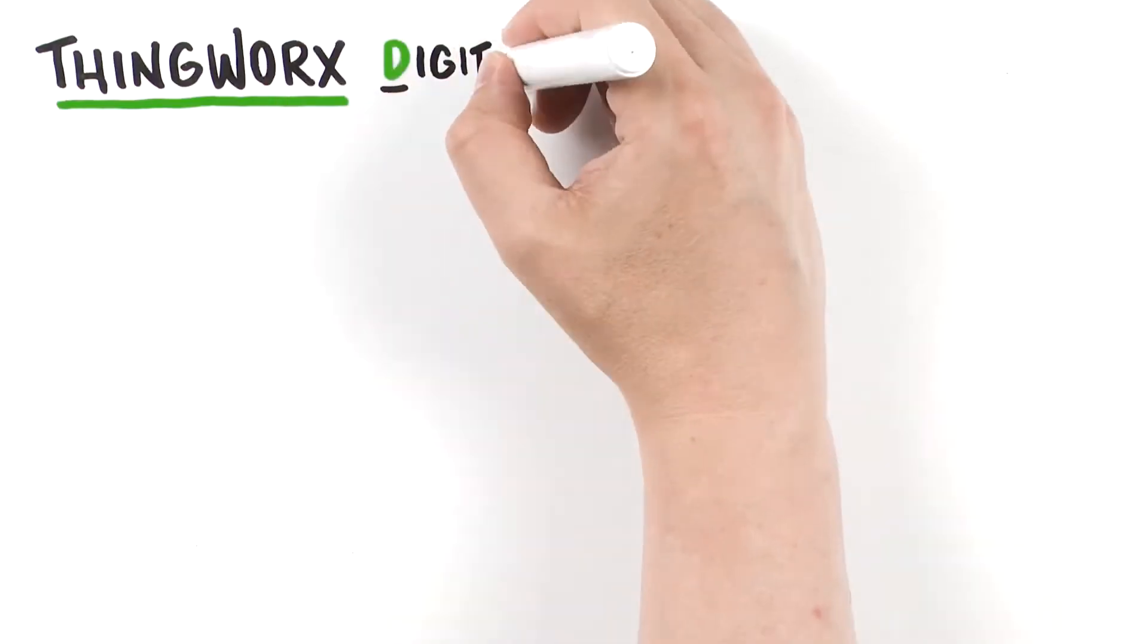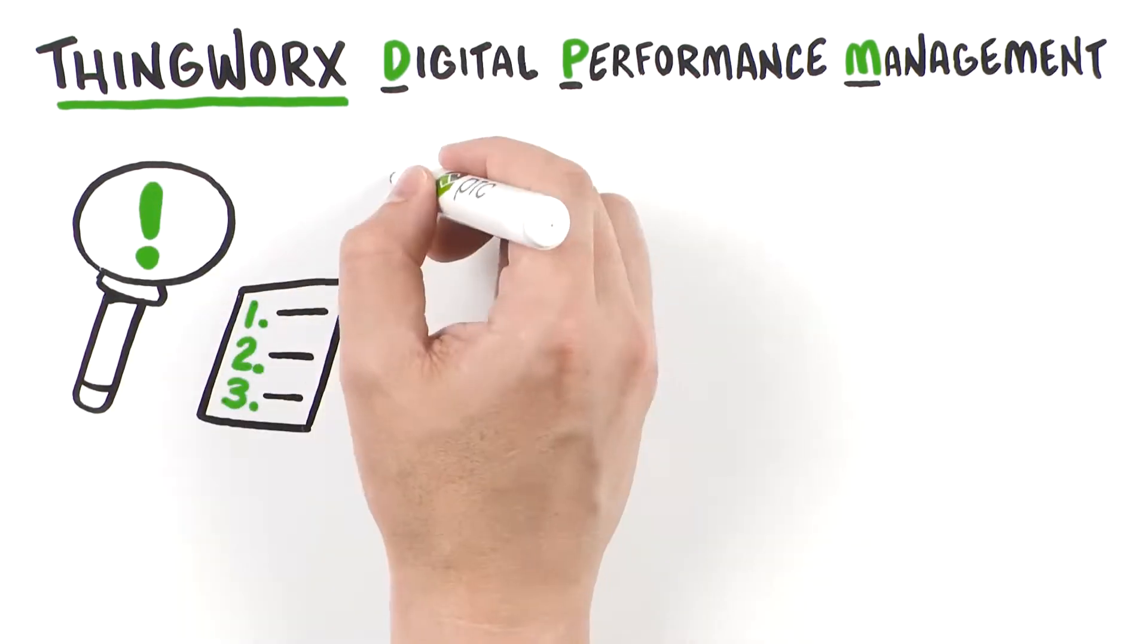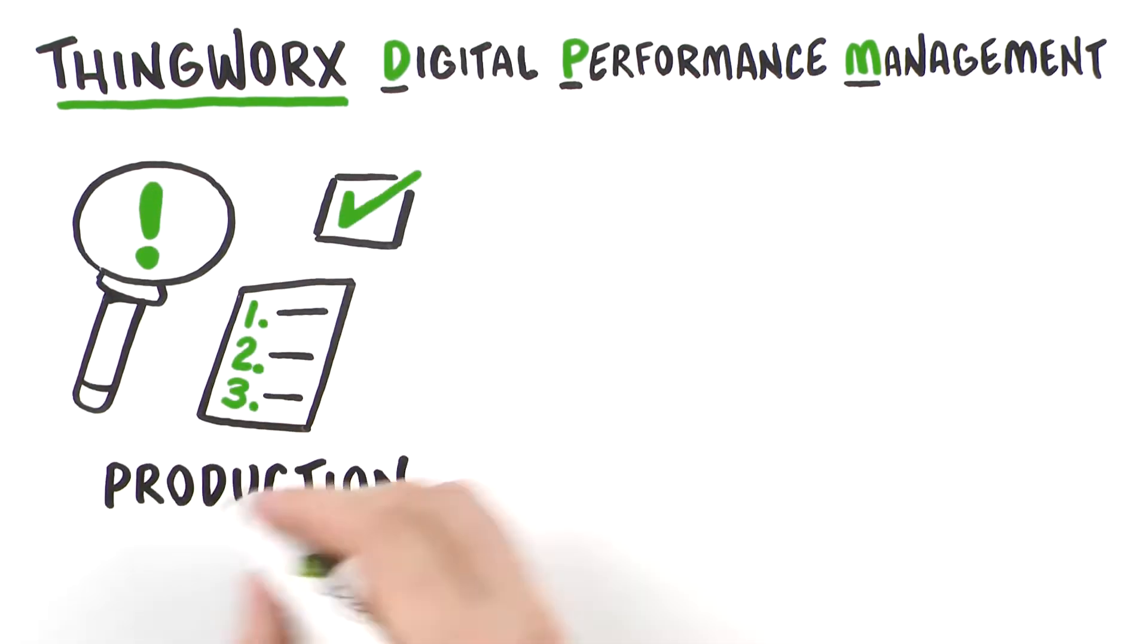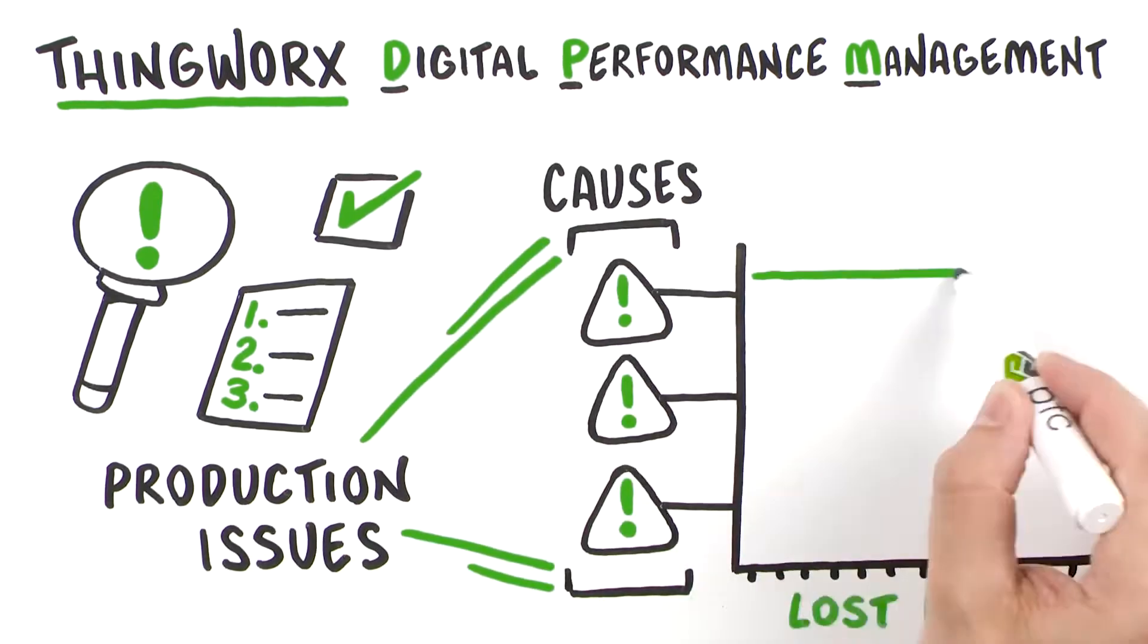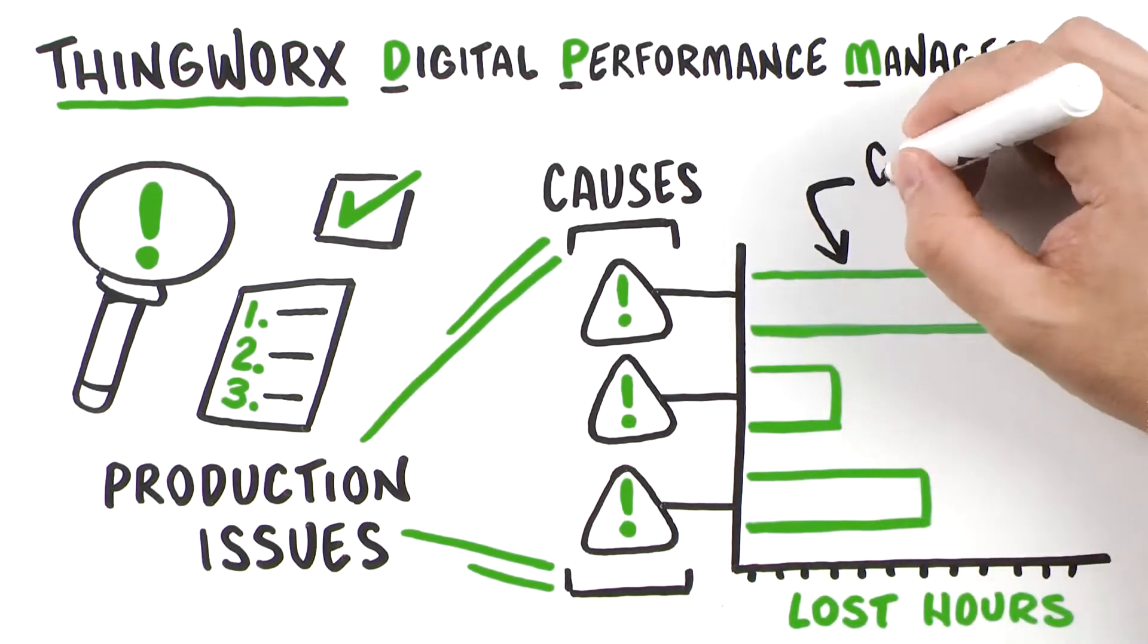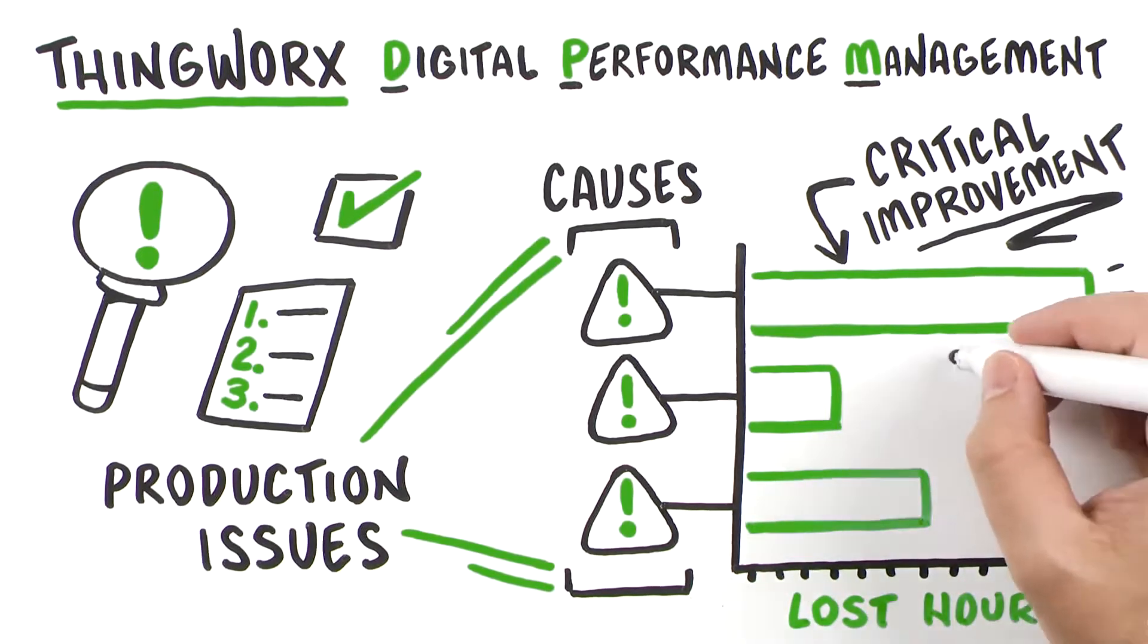ThingWorx Digital Performance Management from PTC helps you identify, prioritize, and improve your most significant production issues. This is done by capturing your lost production hours and their causes, with the distinct advantage of indicating where you can focus for the most critical improvement impact.